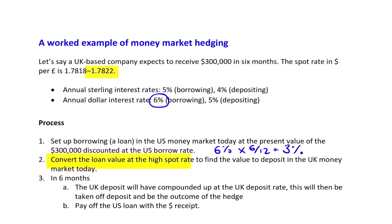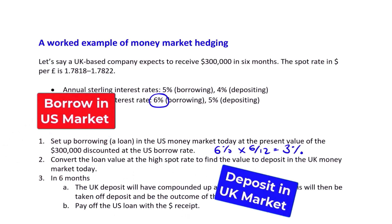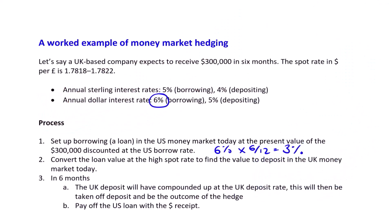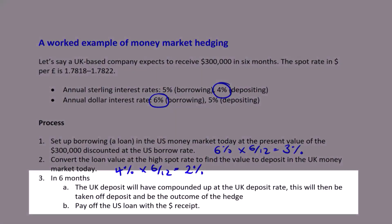We convert the loan value at the high spot rate — because that's the rate we'll get from the bank — to find the value to deposit in the UK money market today. Remember: you do the opposite in the UK base market to what you're doing in the foreign market. Because we're borrowing in the foreign market, we deposit in the UK market. The deposit rate in the UK market is 4%, so at the six-monthly rate that's 2%. In six months, the UK deposit will compound up at the UK deposit rate, and we'll take it off deposit as our receipt. We then receive the dollars from the US customer and use that to pay off the US loan.